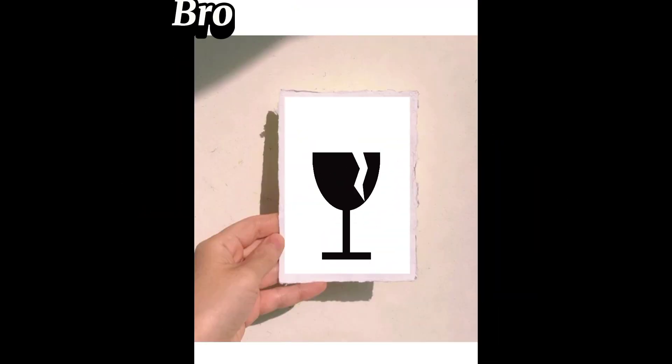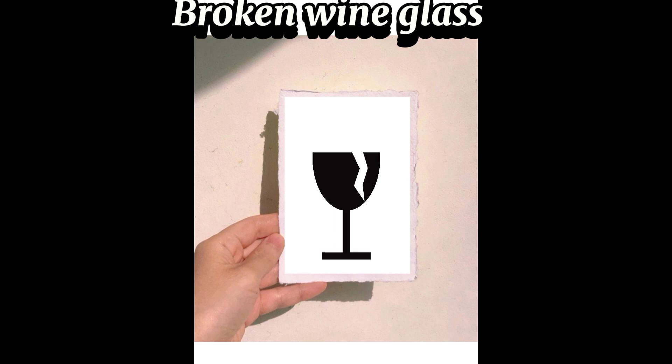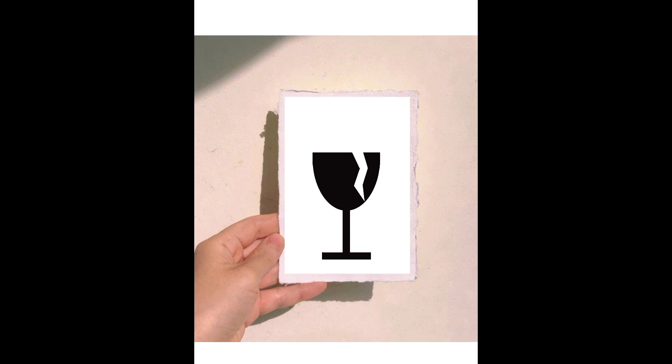Let's start with the broken wine glass. This symbol indicates the product inside the box is delicate or fragile and needs to be handled with care, not necessarily made of glass. The origin of this symbol is unknown, but some believe it might be inspired by a broken wine glass found in a shipwreck.